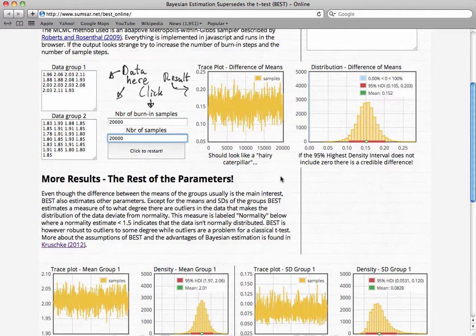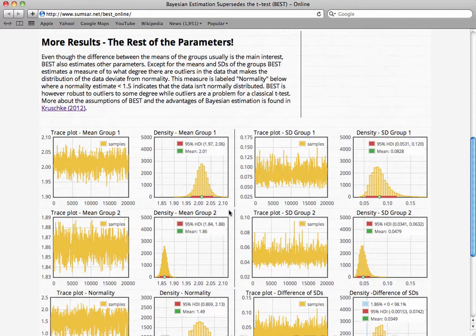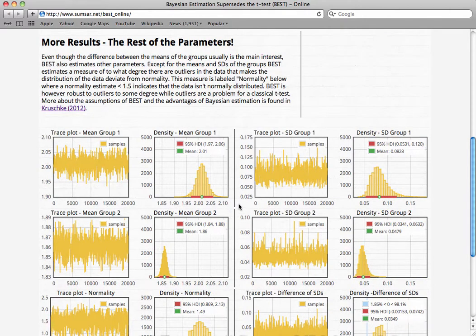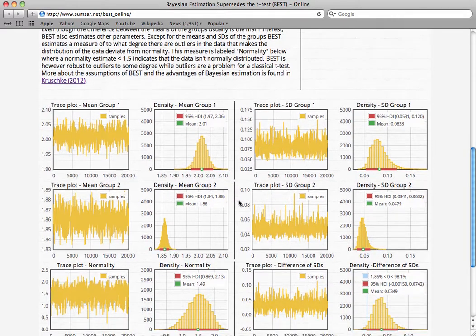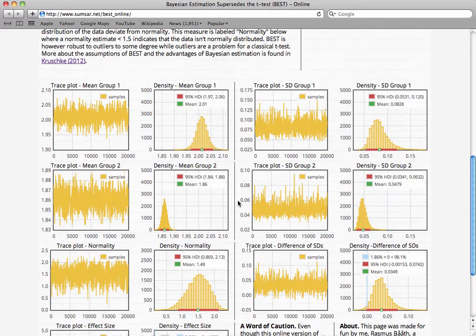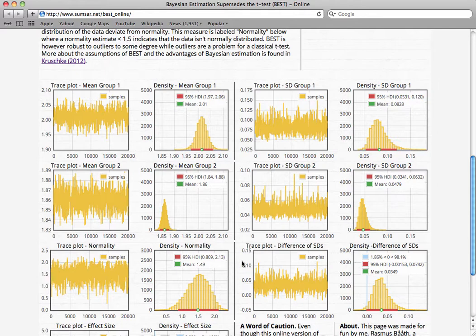Notice that you cannot do this with NHST. In addition, you get a very rich array of data from the rest of your parameters, even though essentially we're just trying to estimate a parameter group difference between the means. We can also look at each mean individually for each group, in addition to other parameters like standard deviation and normality.